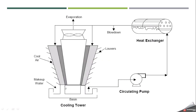The schematic of the open recirculating system shows a basin from which cold water is taken and sent to the heat exchanger. The water absorbs heat from the process, some is blown down, and the rest is sent to the cooling tower. In the cooling tower, water is sprayed and mixed with cooled air. The air takes heat from the water, some water evaporates, and the remaining cooled water returns to the basin to be reused.